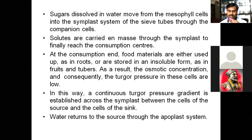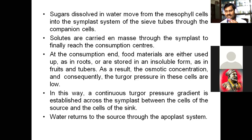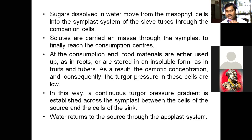Sucrose or glucose is moving but starch is not moving; starch is produced by the storage organ after the sugars arrive. As a result, the osmotic concentration and consequently the turgor pressure in these sink cells are low, so the food moves from phloem to the deficient or sink cell where food is needed. A continuous turgor pressure gradient is maintained across the symplast between the cells of the source and the cells of the sink.